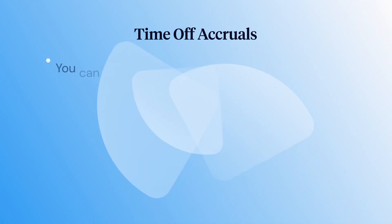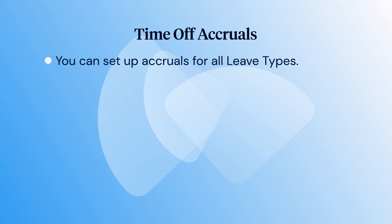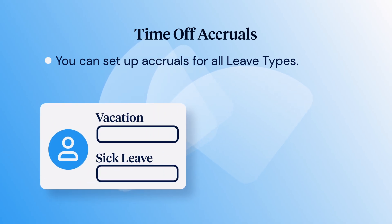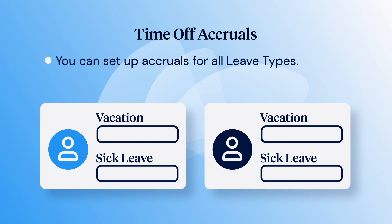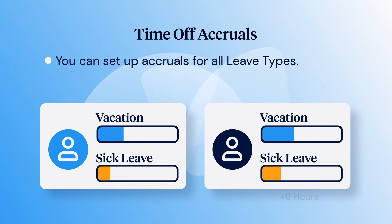Accruals can be set up for any employee and any leave type in ClickTime. Different leave types can accrue at different rates and for different employees. For example, you can award eight hours of vacation and four hours of sick time each month to one staffer, and more or less to another.